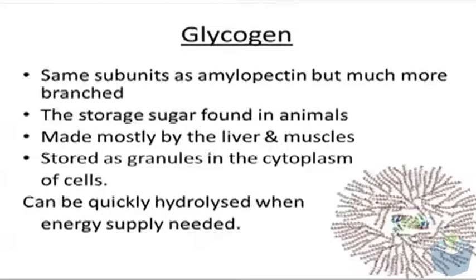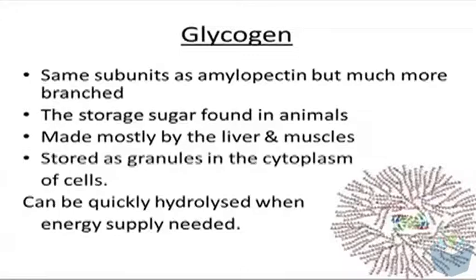Glycogen is a storage molecule found within humans. Where plants have starch, humans have glycogen. It has the same subunit — essentially glucose again — and it is stored within the muscles and also within the liver. It can be very quickly broken down because of its hugely branched structure; it has a lot more 1,6 glycosidic bonds, allowing it to release energy very quickly. This is obviously important in animals because animals require energy at a quicker rate.